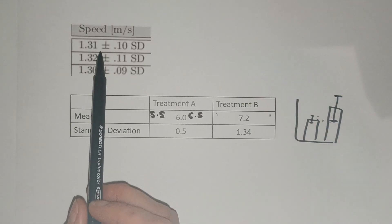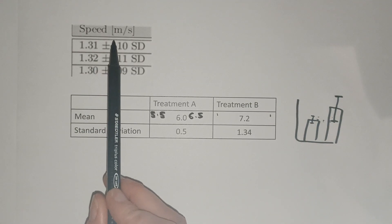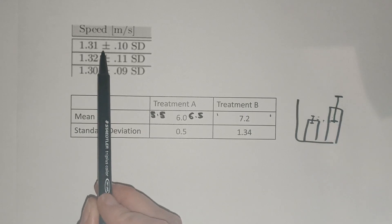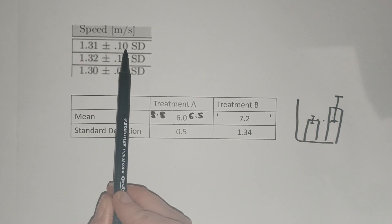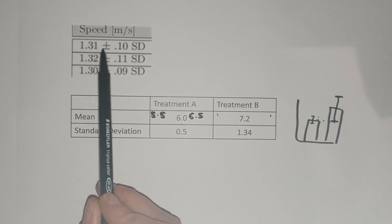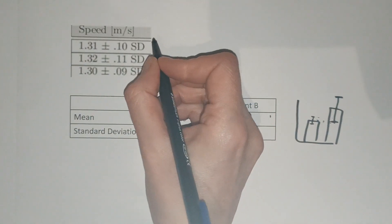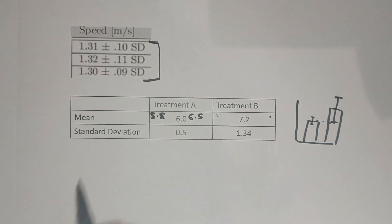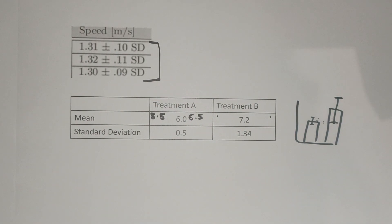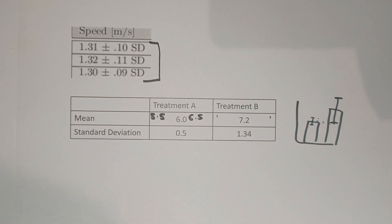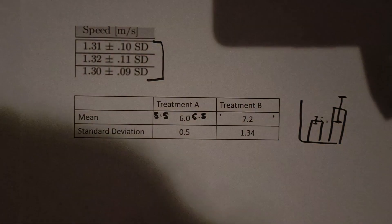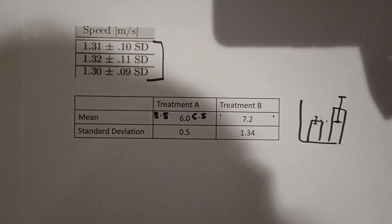You might see this written in a results table like this as well. This plus or minus tells you that this number can go up by 0.1 to 1.41, or down by 0.1 to 1.21. So if you ever see in an exam that they've given you these plus or minuses with some numbers, you can anticipate that they're going to be asking you about the effect of overlapping. And don't forget, when they overlap, it's a bad sign because the data might not be statistically significant.